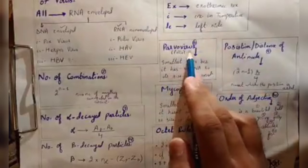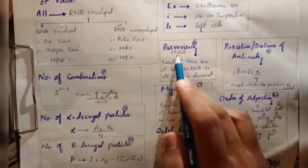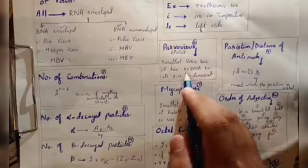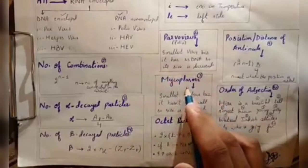Parvoviruses: you can ask the smallest virus. It is parvoviruses. We know that DNA is double-stranded, but parvovirus DNA is single-stranded due to its size.